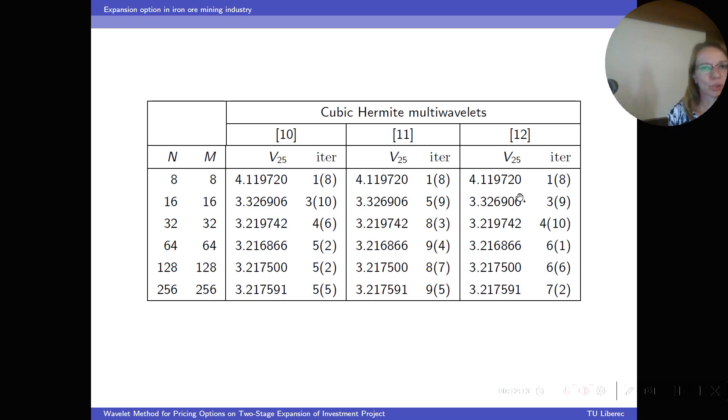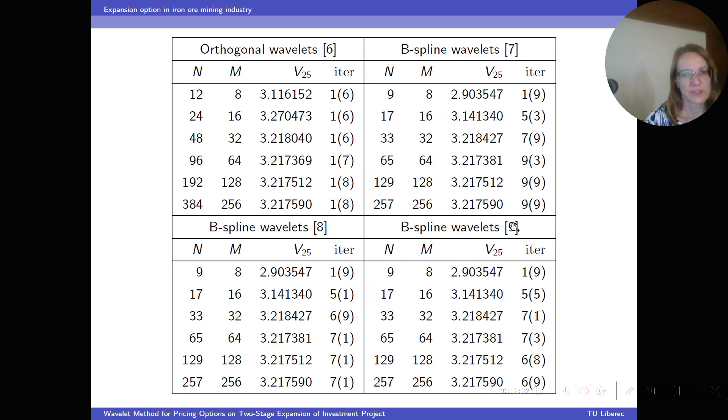Here are the results for cubic Hermite multi-wavelets. And here the conclusion is the same. The method was also higher order convergent and numbers of iterations were uniformly bounded. However, regarding numbers of iterations, the orthogonal wavelets seem to be superior to other wavelets because they require just one outer iteration.